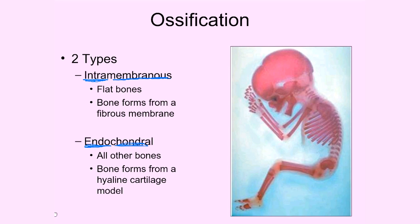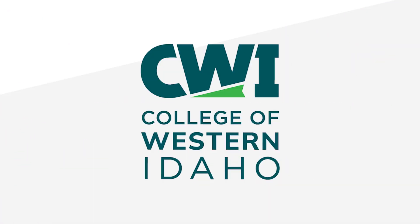One important thing to know about ossification is that when we say flat bones are formed primarily from intramembranous ossification and long bones primarily from endochondral ossification, it's not completely black and white. The clavicles are a good example: they are flat bones formed primarily through intramembranous ossification, but there is also some endochondral ossification that happens within them as well.